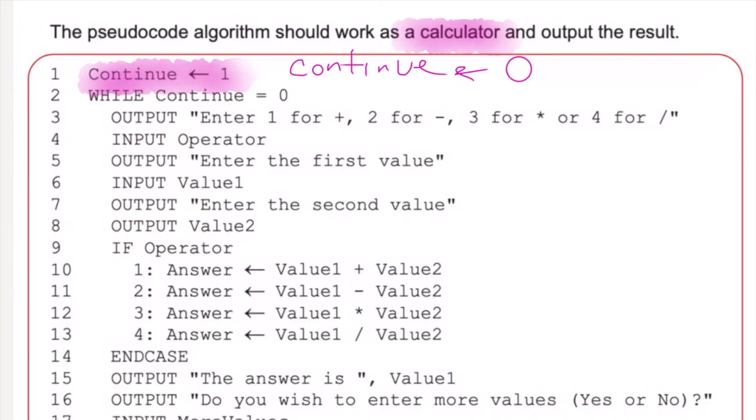While continue equals 0, output enter 1 for plus, 2 for minus, 3 for multiply, or 4 for divide. Input the operator, that seems all fine. Output enter the first value, so the user is going to enter the first value to go into the calculator. The user inputs that first value. The output enter the second value. Output value 2. Well, why would it output value 2? We've already inputted value 1 here in line 6, so surely we're going to input value 2 in line 8. So I'm just going to put a highlight over that one, and I think this is the right one, I'm going to go input value 2 would be my thought there.